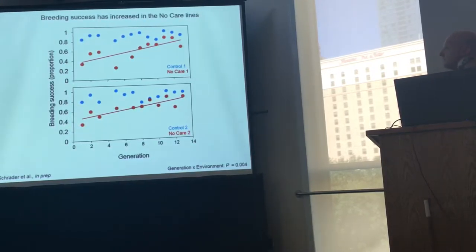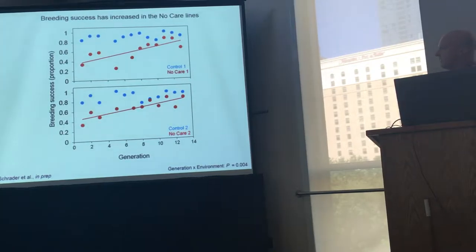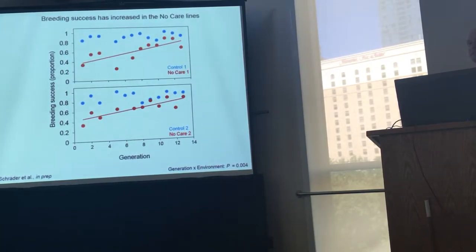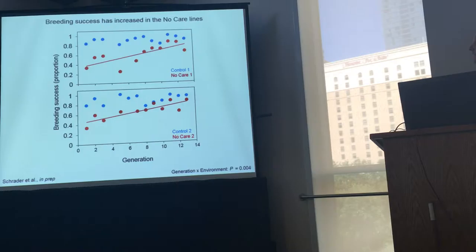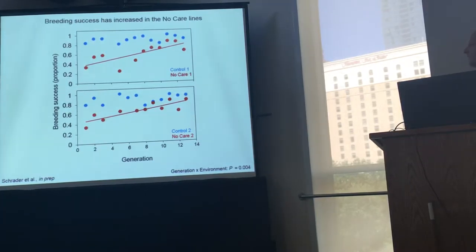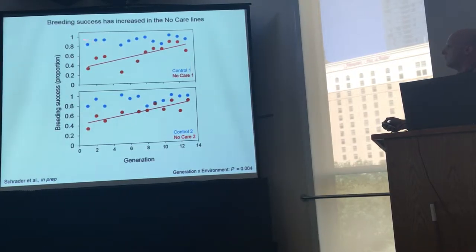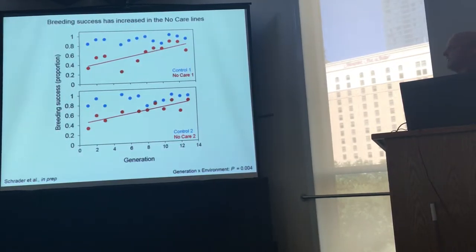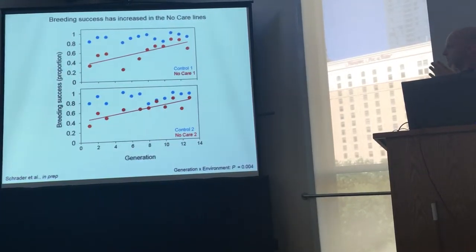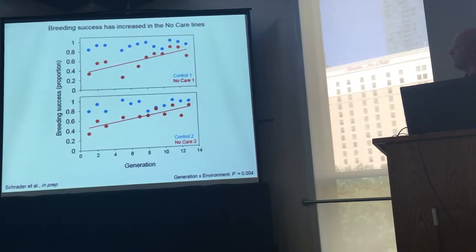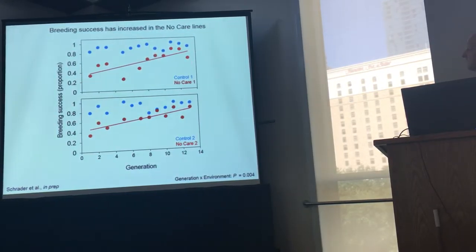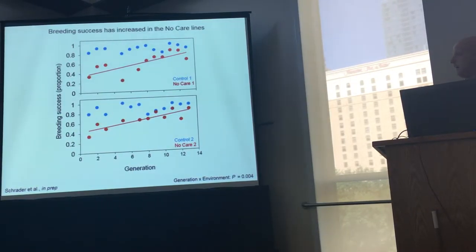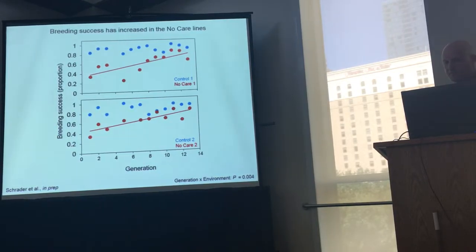The first thing we found is that breeding success has increased dramatically in the no-care lines over the first 13 generations. On the Y-axis is breeding success as the proportion of pairs that produce dispersing larvae, and on the X-axis is the generation. The control lines are in blue and the no-care lines in red. In the control lines, breeding success is really high — typically over 80% — bouncing around from generation to generation with no directional change. But in both no-care lines, breeding success initially was quite low, around 35% at the beginning, and it's increased to between 65 and 70% by generation 13. So it appears there's been adaptation to this no-care environment.